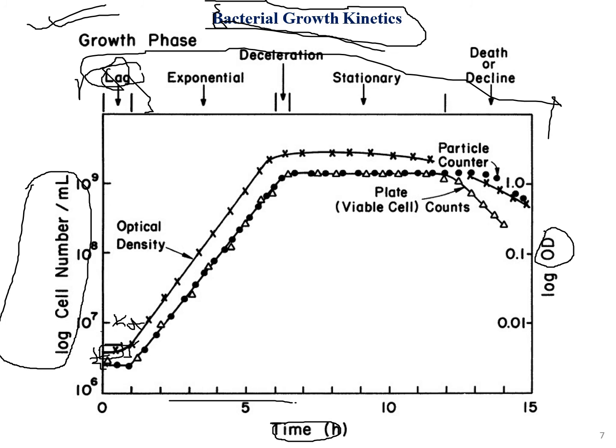During the lag phase, the bacteria absorb nutrients and get used to the environmental conditions. After the lag phase ends and the bacteria have adapted and consumed their nutrients, they start multiplying rapidly. This produces the steep curve visible on the graph — this is the exponential phase, where the bacterium is in its most active state and multiplies very quickly with very low death rates.